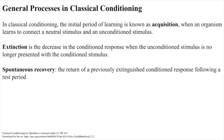General processes in classical conditioning: the initial period of learning is known as acquisition, when an organism learns to connect a neutral stimulus and an unconditioned stimulus. During acquisition, the neutral stimulus begins to elicit the conditioned response, and eventually the neutral stimulus becomes a conditioned stimulus capable of eliciting the conditioned response by itself. Timing is important for conditioning to occur. Typically, there should only be a brief interval between presentation of the conditioned stimulus and the unconditioned stimulus — sometimes as little as five seconds.